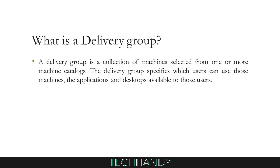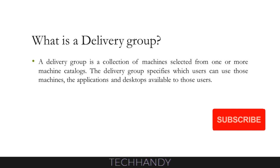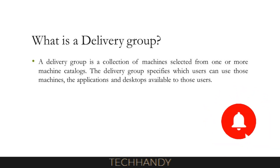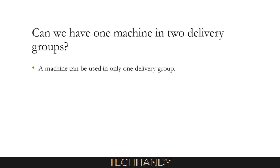What is a delivery group? A delivery group is a collection of machines selected from one or more machine catalogs. The delivery group specifies which users can use those machines, and the applications and desktops available to those users. Can we have one machine in two delivery groups? One machine can be used in only one delivery group.